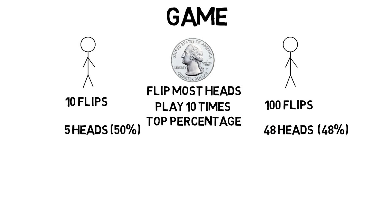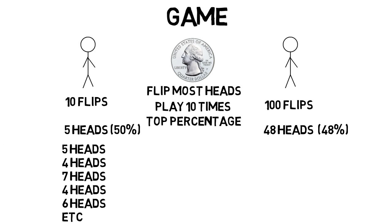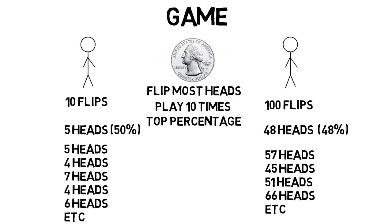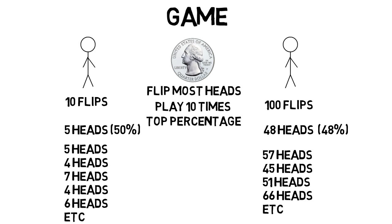In the first 10 flips, this person might get 5 heads, then 4, then 7, then 4, then 6, and so on. The other person might get 57, 45, 51, 66, and so on. You take the highest percentage of all 10 and that's the winner.